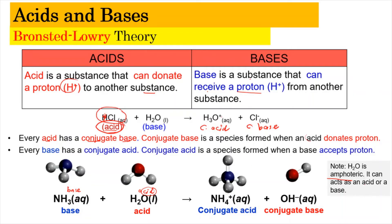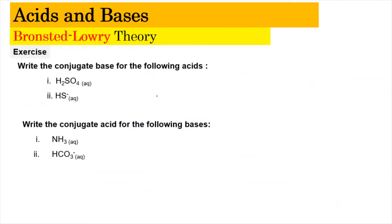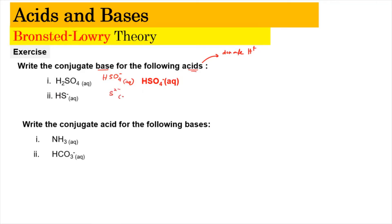To understand more, let's look at Exercise 1: write the conjugate base for the following acids. According to Bronsted-Lowry, the acid donates H⁺ to form the conjugate base. When H₂SO₄ donates one proton, it becomes HSO₄⁻ aqueous. Similarly, when HS⁻ loses a hydrogen, it becomes S²⁻ aqueous.